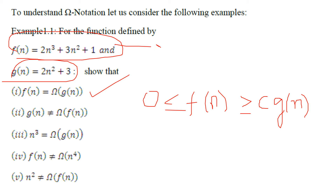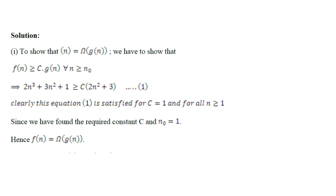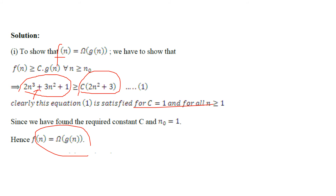To show f(n) = Ω(g(n)), we need to prove that 2n³ + 3n² + 1 ≥ c·(2n² + 3). Substituting n = 1, this inequality holds good when c = 1 for all n ≥ 1. It is obvious that the growth of f(n) is greater than that of g(n). Similarly, you can try the theta notation where you find c₁ and c₂ to express a tight bound.